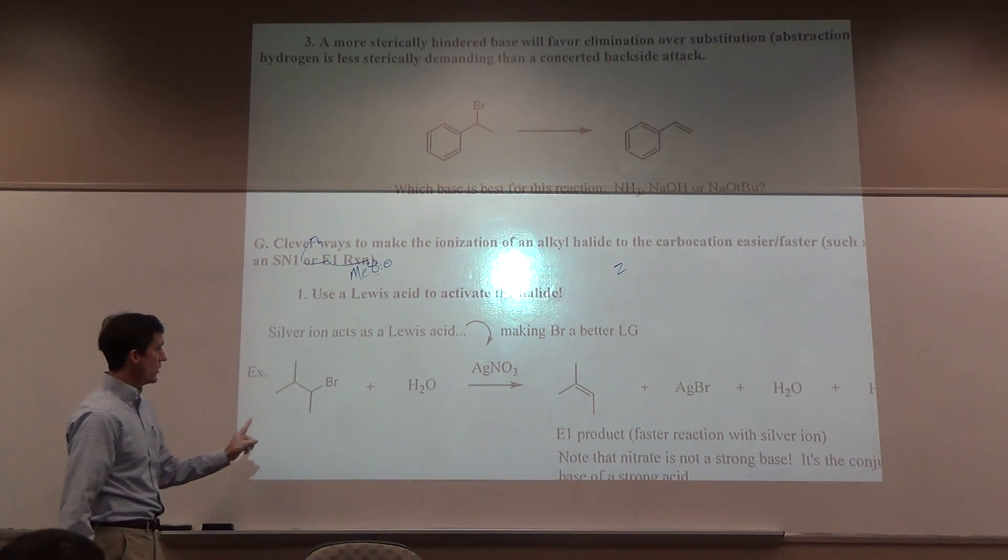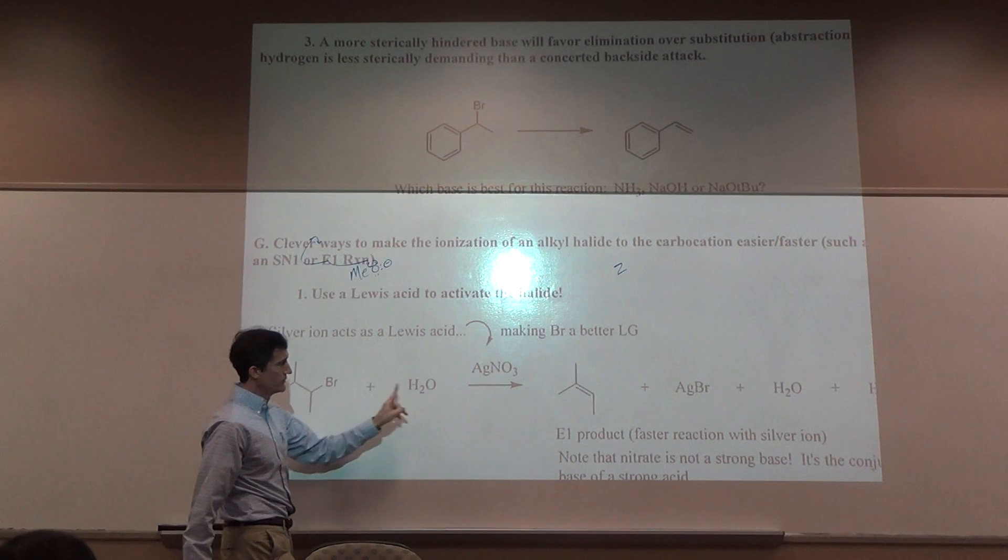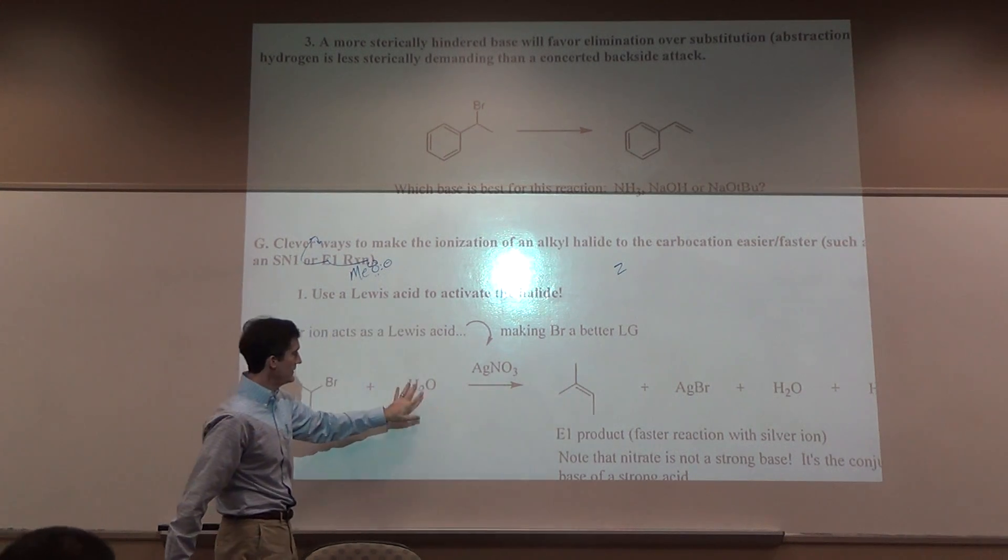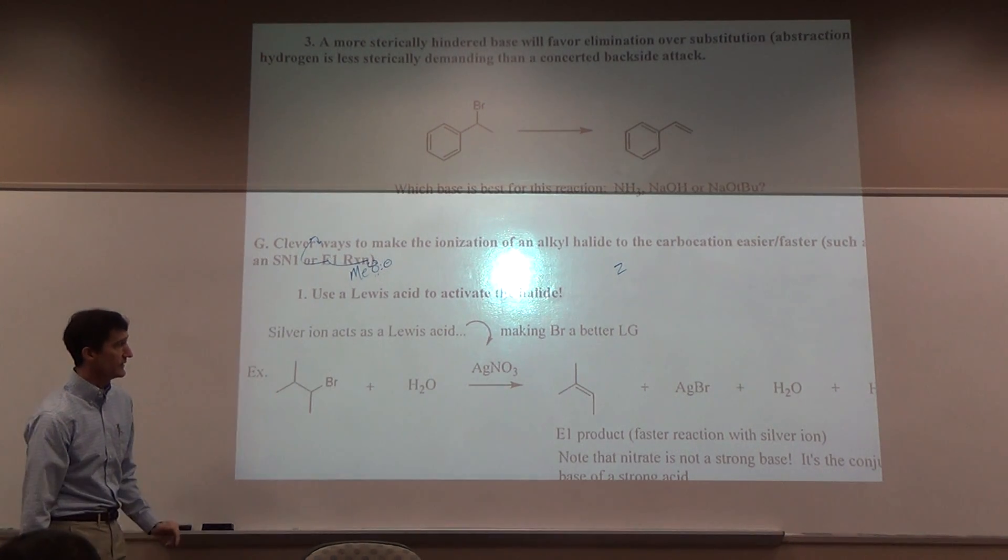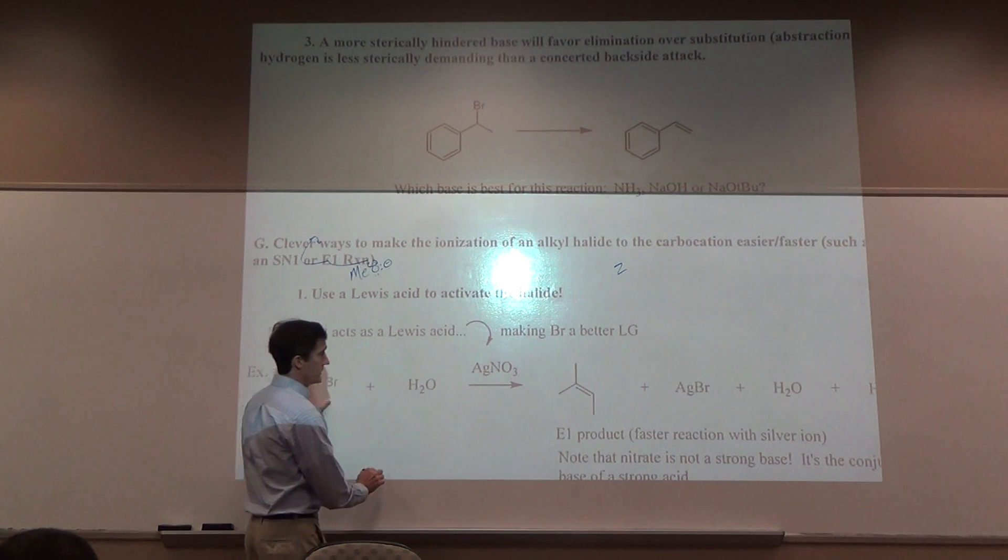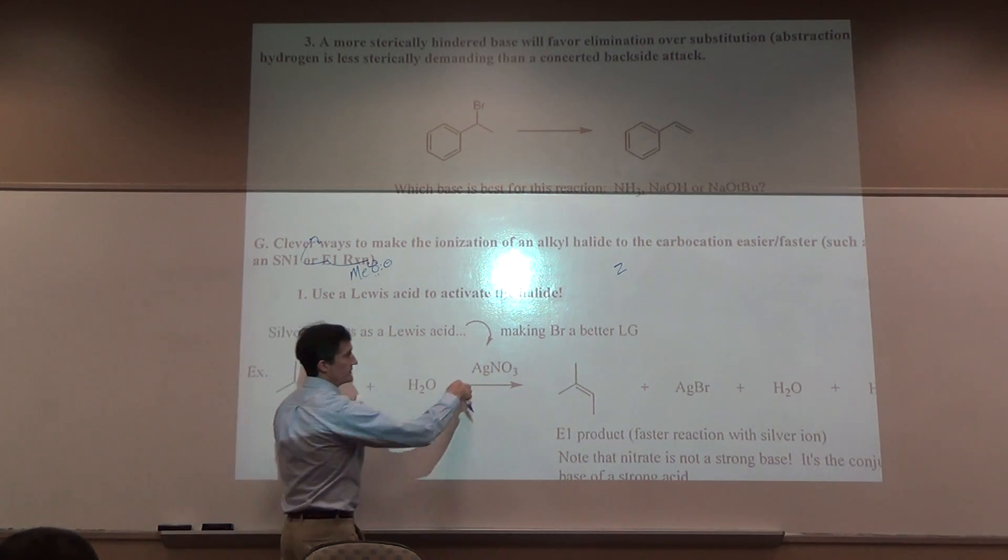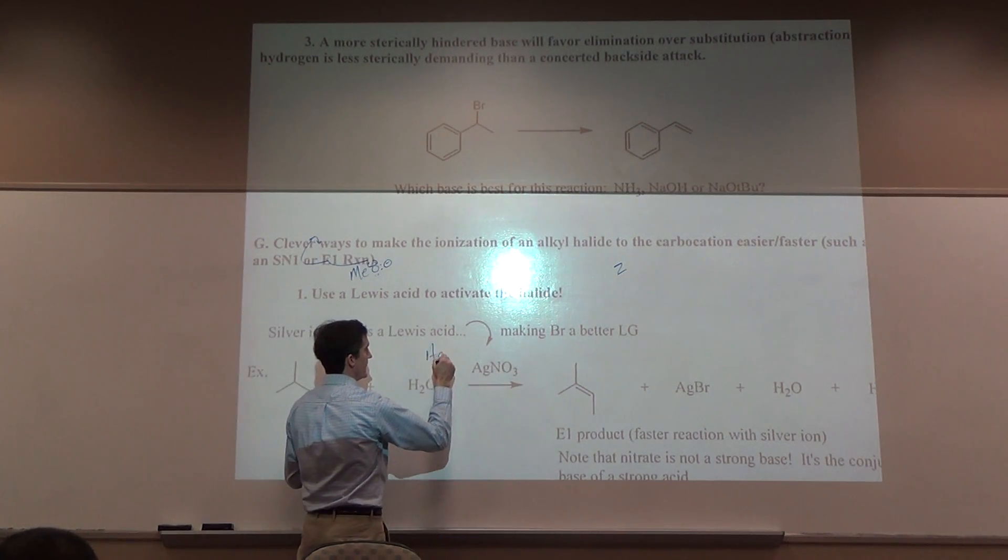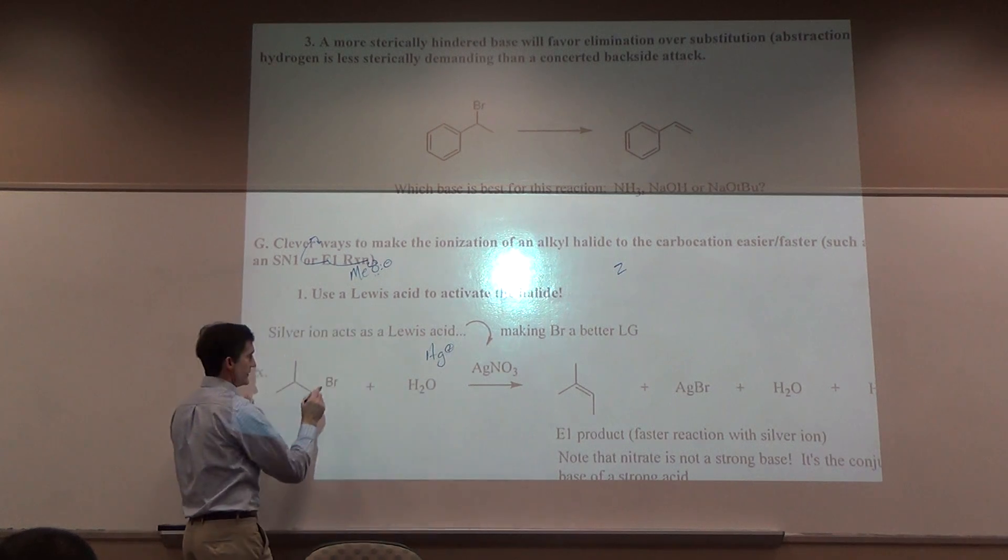One way to do it is include silver ion. So you take this, you want to do an elimination reaction. Maybe you're using water or maybe you're using nothing. You just want it to ionize off. Throw in some silver nitrate, silver ion. And basically your halides are very attracted to silver ion.